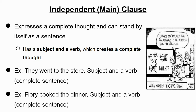So an independent clause, like a person who is independent, stands alone. They don't need any help. It expresses a complete thought and it can stand by itself as a sentence. It has a subject and a verb and it creates a complete thought. 'They went to the store' — subject: they, verb: went. I understand it's not a 10th grade sentence, but I'm just using it to make this point.